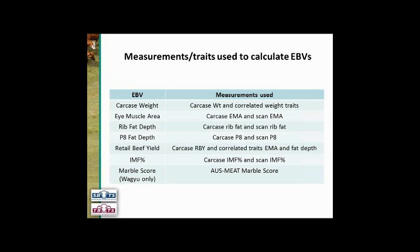P8 follows the same principle. Retail beef yield — in some experiments carcasses have been boned out to calculate percentage of saleable beef, but that's expensive and difficult to organise. In the vast majority of cases, retail beef yield is calculated from the correlation between eye muscle area — larger EMA predicts higher retail beef yield — and fat depth, where higher fat depth predicts lower retail beef yield. The IMF percent EBV is calculated from carcass IMF percent if available, otherwise scan IMF percent. The wagyu breed has an EBV for Ausmeat marble score calculated from actual Ausmeat marble scores on carcasses.